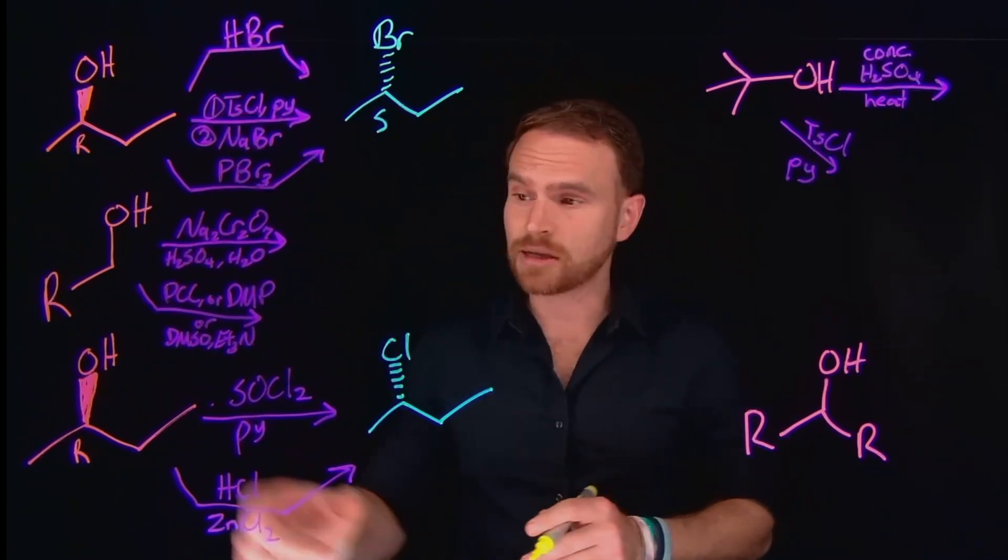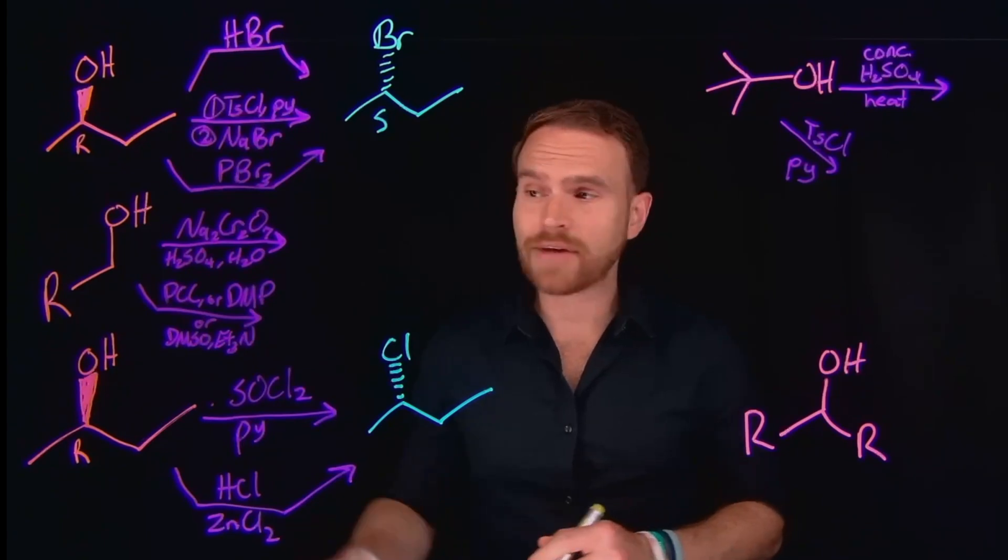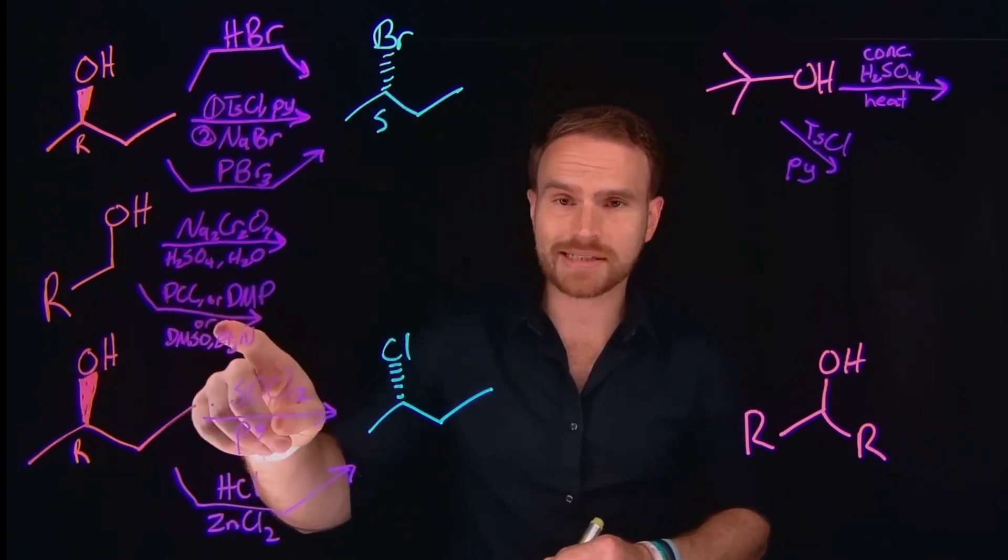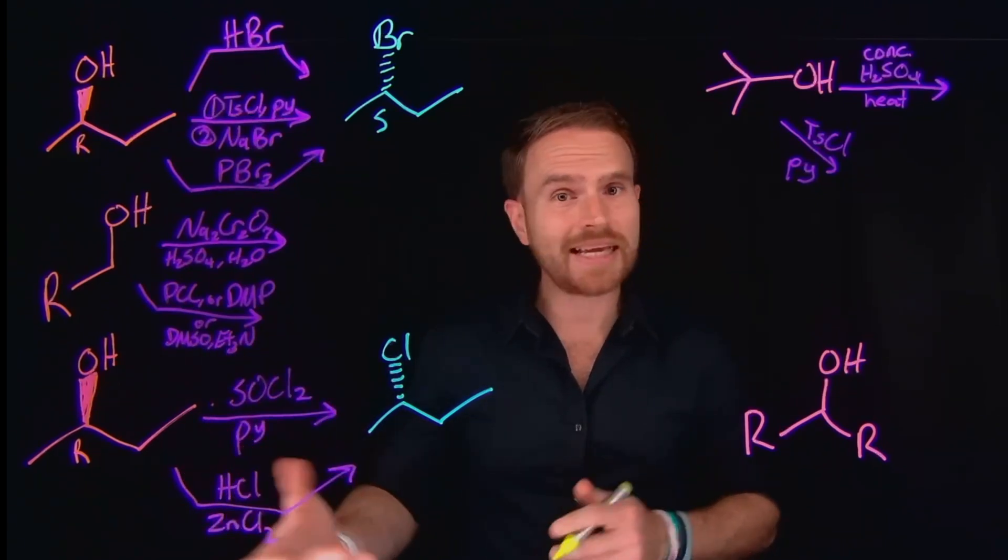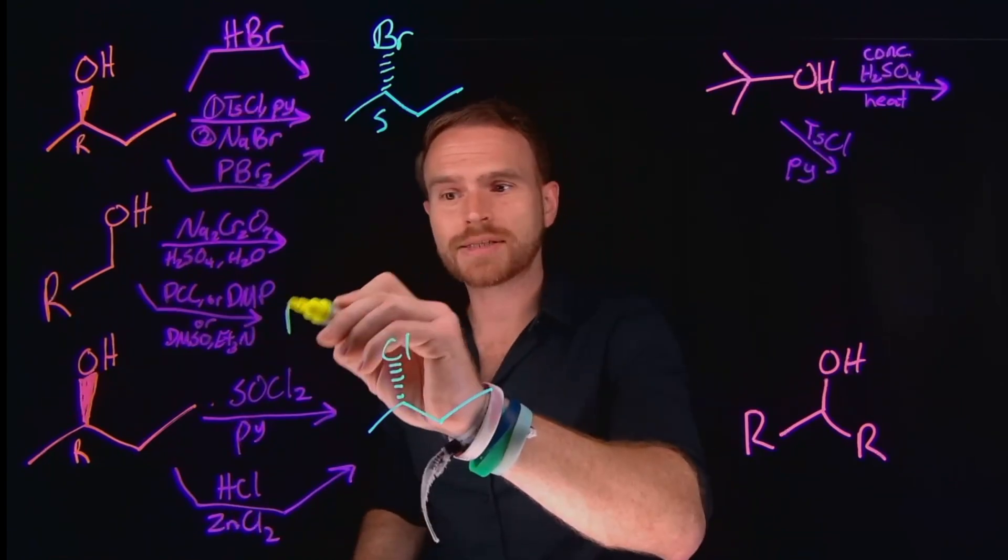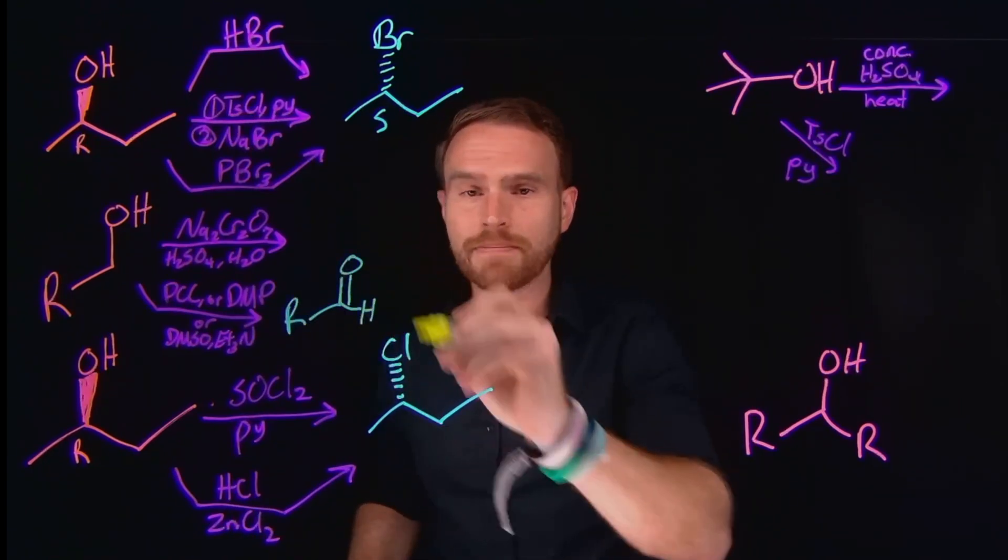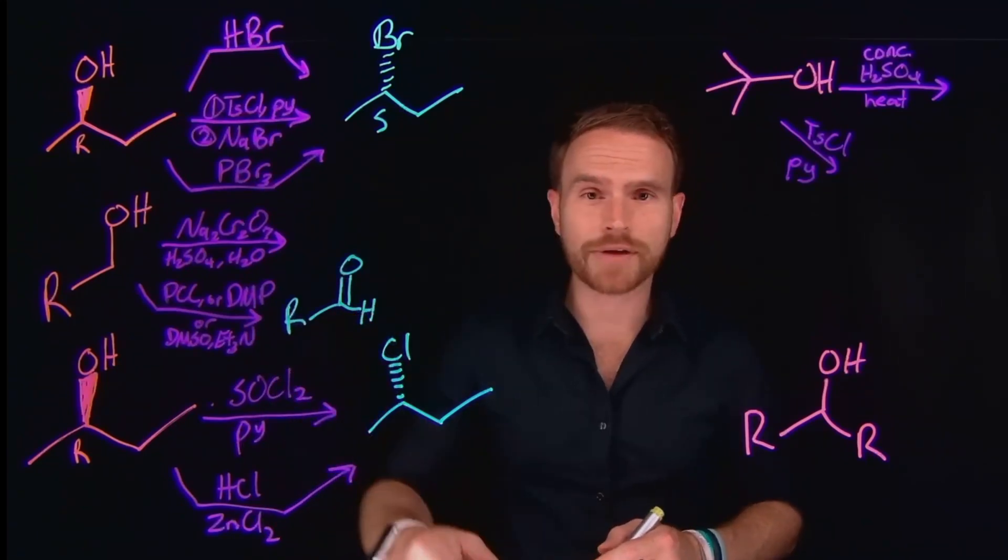Just like there are multiple ways to substitute alcohols, there are multiple ways to oxidize alcohols. If you have a primary alcohol, like in this case, and you add it to PCC or DMP or even DMSO and triethylamine, each of these are examples of ways to make aldehydes. The reason that they make aldehydes is because these are all three relatively mild oxidizing reagents, which means that they'll only oxidize to aldehydes.